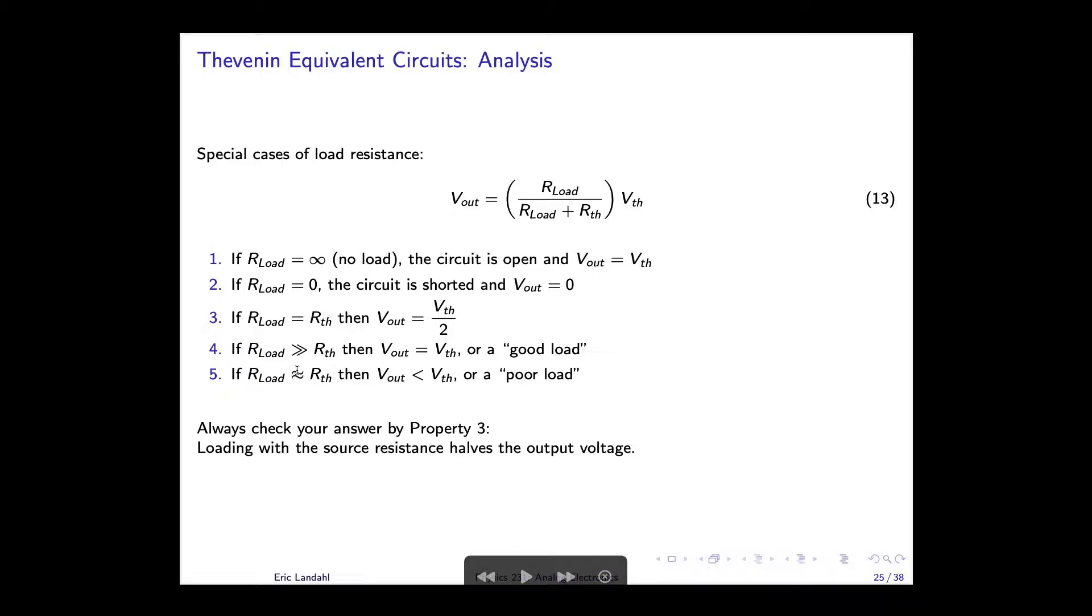So a good load is one where Rload is much bigger than Rth, and the output voltage hardly drops when you connect a load. If, however, Rload is about equal to Rth, then we see that this quantity in the parentheses can have all sorts of values, and Vout can be significantly smaller than Vth, or even just change quite a bit enough to be a problem in our circuits. We call that a poor load. So a good load is a large resistor, and a poor load is a small resistor. Why is it a poor load? Because it draws a lot of current, loading the circuit and dropping the voltage, dropping the signal from what you had hoped to put in.